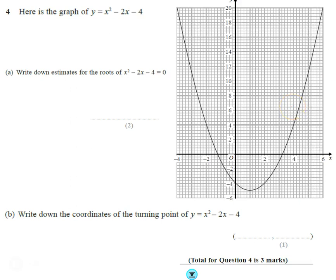Okay, so question number four. Here's the graph of a quadratic, y equals x squared minus 2x minus 4. Now we need to estimate the roots. First, let's check the scale. We know that this is 1, there is 2, and therefore there is minus 1. We've got to get the scale right.